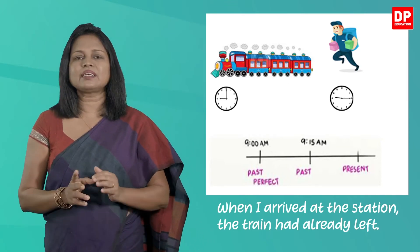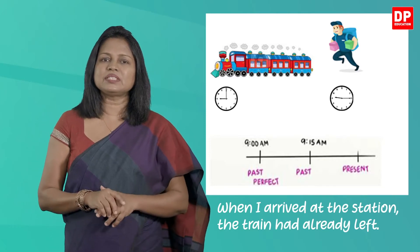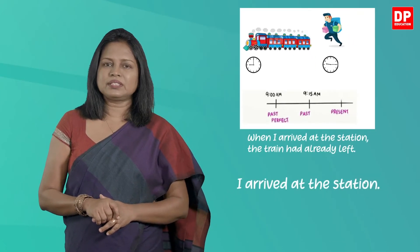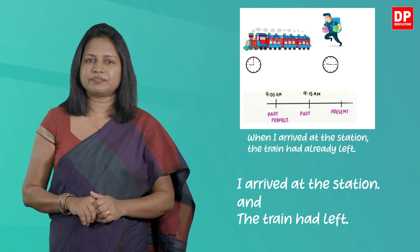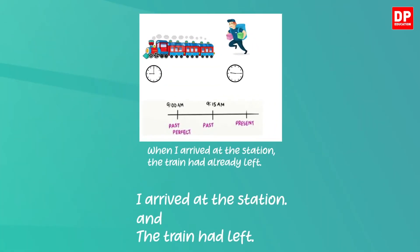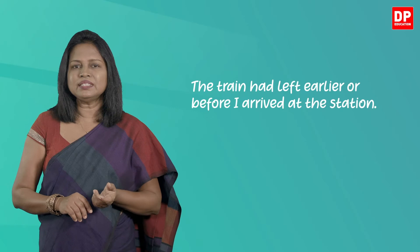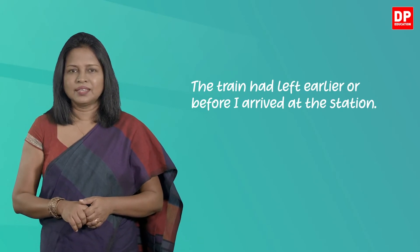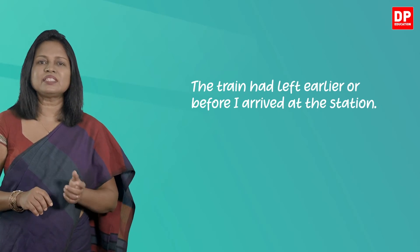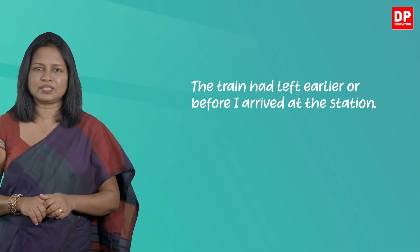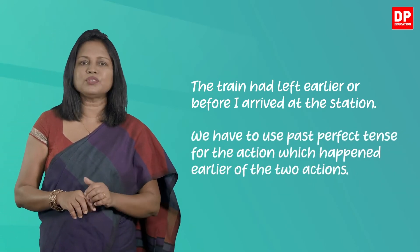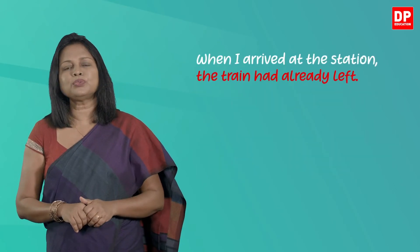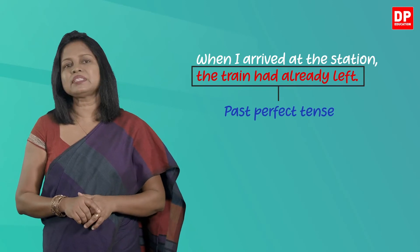You can understand that there are two actions mentioned in the sentence. One is 'I arrived at the station' and the other is 'the train had left.' The train had left earlier, before I arrived at the station. So I was not able to catch the train. We have to use past perfect tense for the action which happened earlier — that's why we use 'the train had left,' which is in past perfect tense.